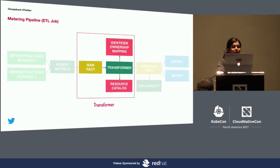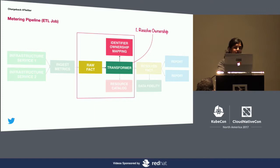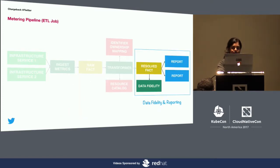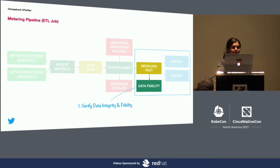This is transformed by the data transform service whose job is twofold. First, it resolves ownership of a client identifier from a RAWFACT to an appropriate team or organization. Second, it uses the offering measure and volume to compute total cost. The transformed data is then stored in our result fact table. Before being consumed by reports, the data is validated by the data fidelity service. Data fidelity is very important to us to ensure that the usage and cost are true to the cost of ownership.